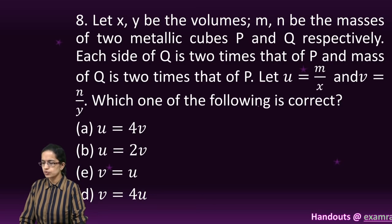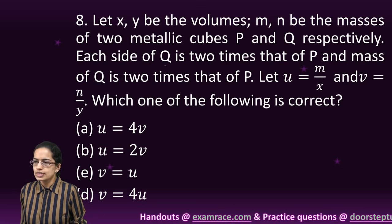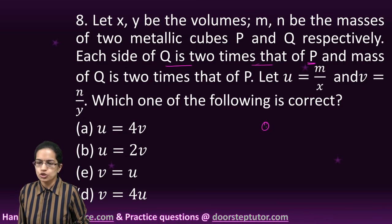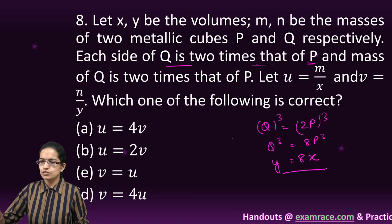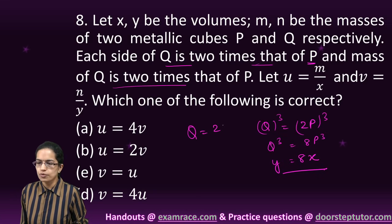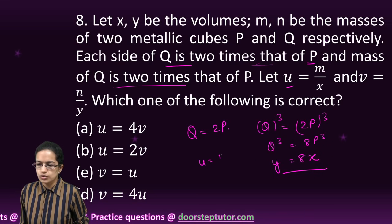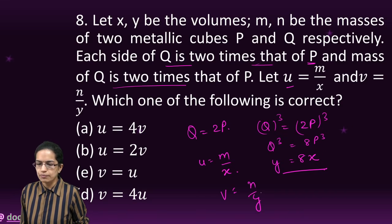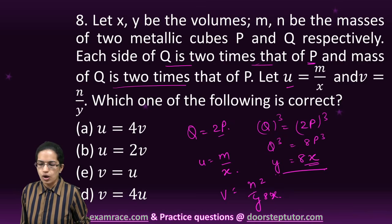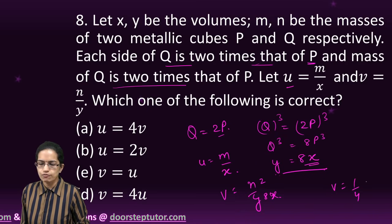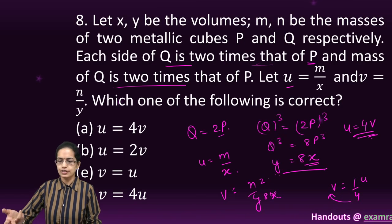The next question is an interesting one. We have two metallic cubes P and Q. The side of Q is two times that of P, so Q equals 2P. For volume, I take the cube of this, so Q cubed equals 8P cubed, meaning Y equals 8X. Mass of Q is twice of P. So U equals M by X, and V equals N by Y. Since Y is 8X and N is 2M, V equals 2M by 8X, which is 1 by 4 of M by X. Therefore, U equals 4V.